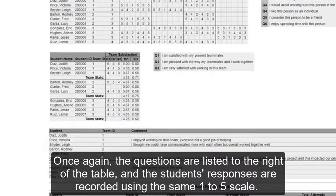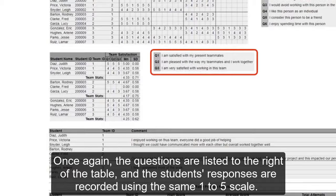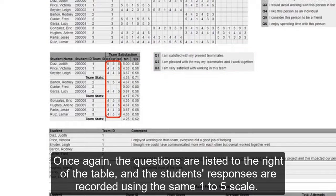Once again, the questions are listed to the right of the table, and the students' responses are recorded using the same 1 to 5 scale.